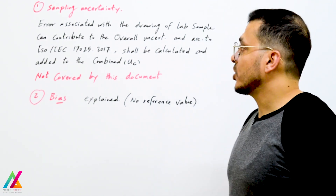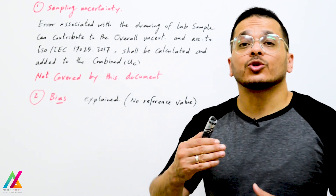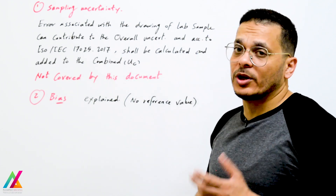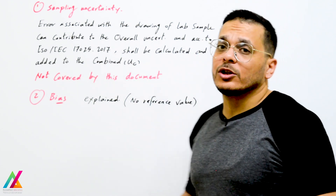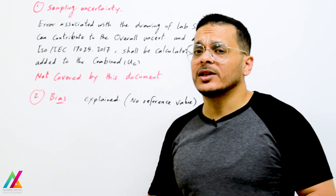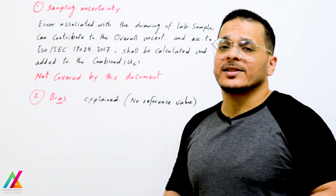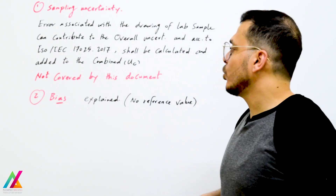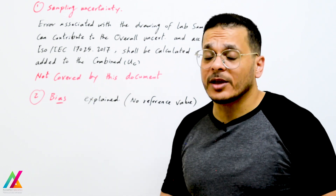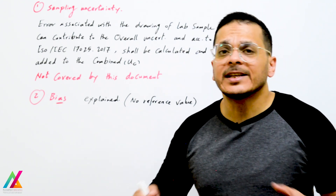First, sampling uncertainty: errors associated with the drawing of the sample, transport of samples to the lab, storage, and everything can contribute to overall uncertainty. According to ISO/IEC 17025:2017, it shall be calculated. You have to calculate measurement uncertainty due to sampling, and that is covered in the NORDTEST and Eurolab guidelines, which explain how to calculate measurement uncertainty in detail.